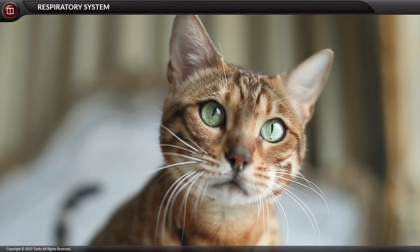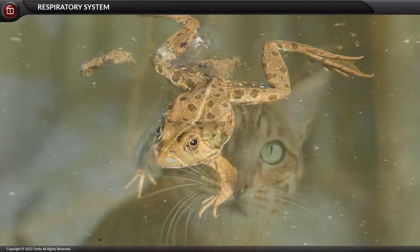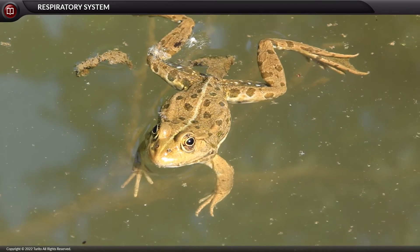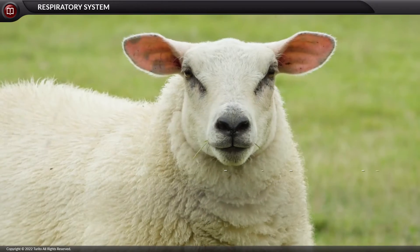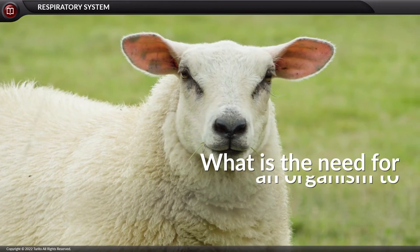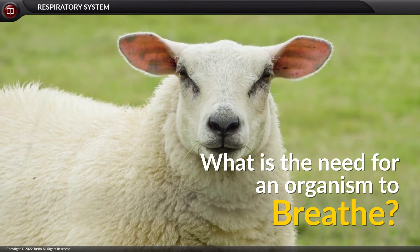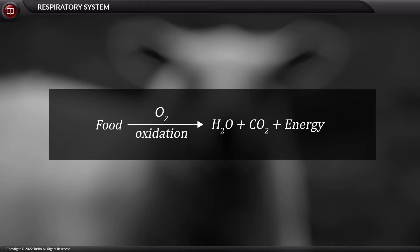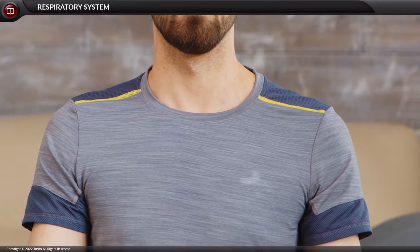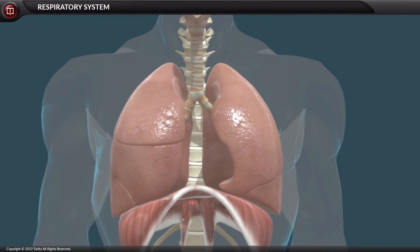Irrespective of any grade of organization, every living organism exhibits breathing. Every organism requires oxygen to oxidize its food, gain energy, and fulfill the body's metabolic activities. The main system involved in respiration is the respiratory system.